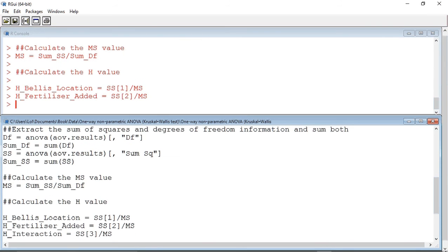We can now convert these H values into probabilities using the chi-square distribution function to calculate the probabilities. And finally, we can calculate an H value for the interaction between location and fertilizer.